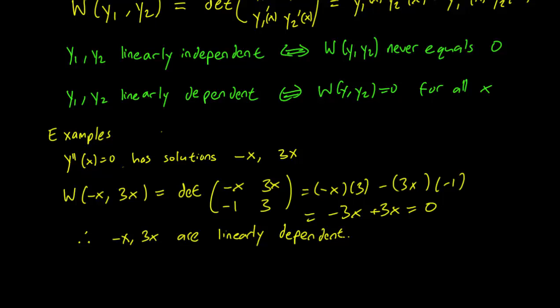And you can see that this is consistent with our other definition of linear dependence, because clearly 3x is minus 3 times x. So one solution is a constant multiple of the other. So our definitions of linear dependence are consistent.